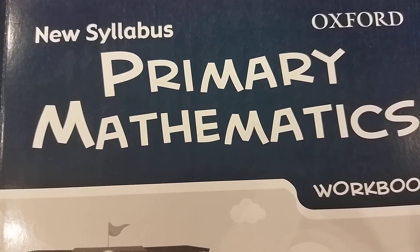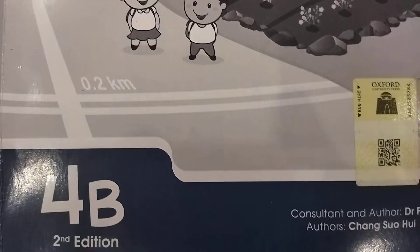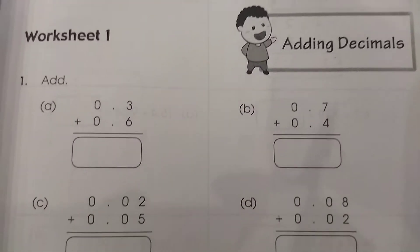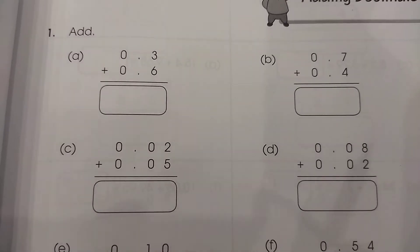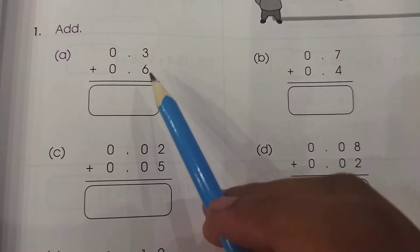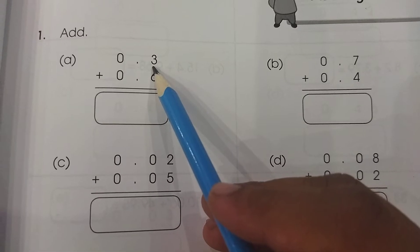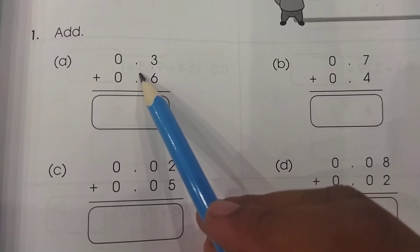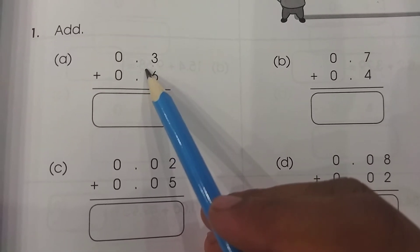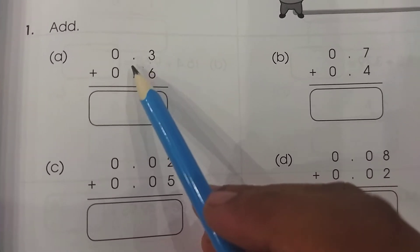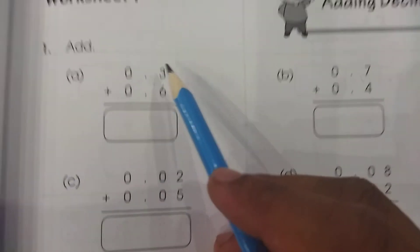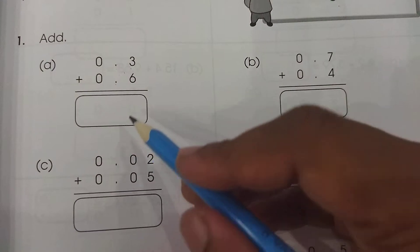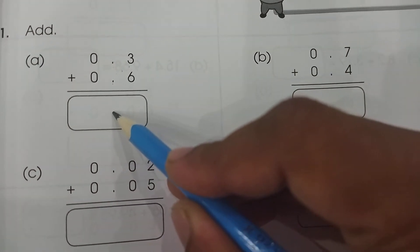This is from the new syllabus Primary Mathematics Workbook 4B, Chapter 9 — Adding Decimals. Here I have some numbers after decimals; this is the tenth value. The most important thing to remember when doing addition and subtraction of decimals is that decimals should always come below decimals. You have to add decimals to decimals.